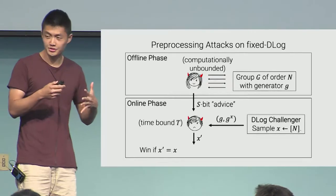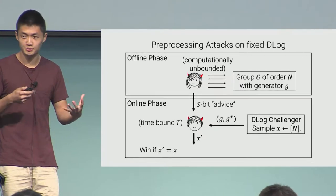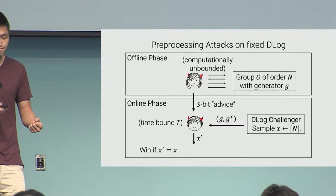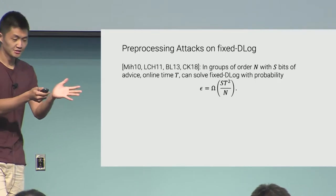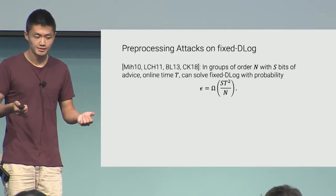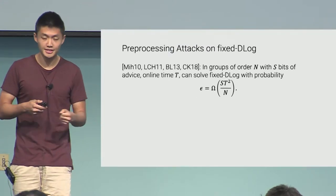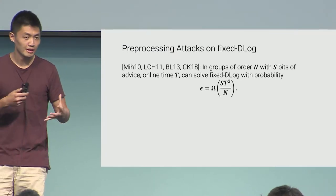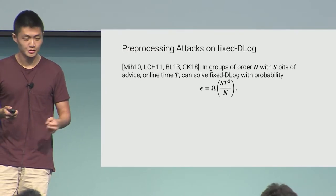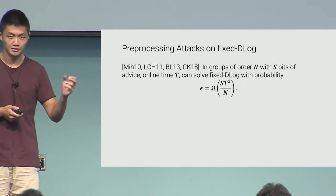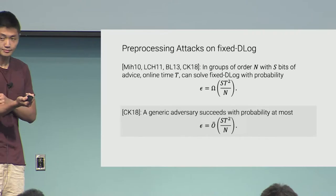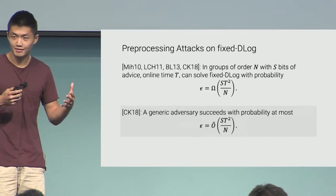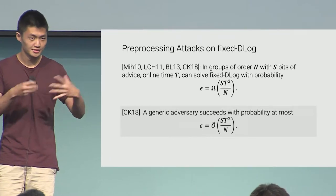In the online phase, the attacker is computationally bounded with some time-bound t. It's given fresh discrete log samples — g, g^x — with respect to that same fixed generator g, and its goal is to find x. This is a popular setting for analyzing generic attacks on discrete log because it mirrors real life, where we only have a handful of cryptographic groups and we're often using the same generator over and over. It's known that for pre-processing attacks on discrete log with s-bit advice, in a group of order n with online time t, you can solve a fixed-generator discrete log problem with probability st² / n. Without any advice, the best you can do is t² / n. This result is actually tight — shown by Corrigan-Gibbs and Kogan at Eurocrypt last year — that a generic adversary succeeds with probability at most st² / n, tight up to polylogarithmic factors.